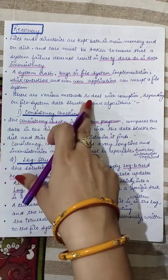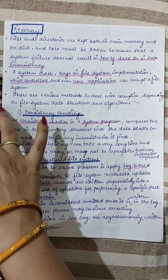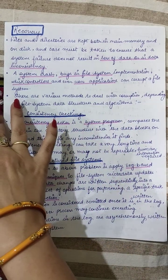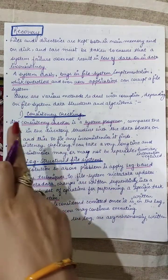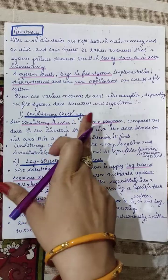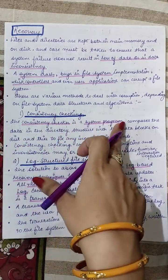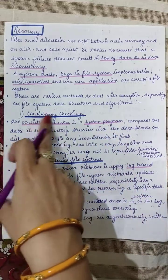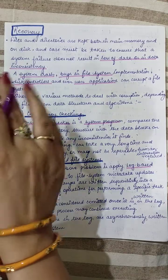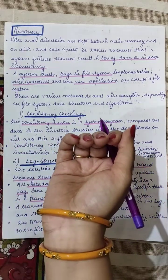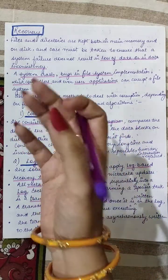The available methods depend on the file system data structures and algorithms used. The first recovery technique is consistency checking. A consistency checker is a software program — a system program — which compares the data stored in the directory structure with the data blocks stored on the disk and tries to fix any inconsistencies it finds.